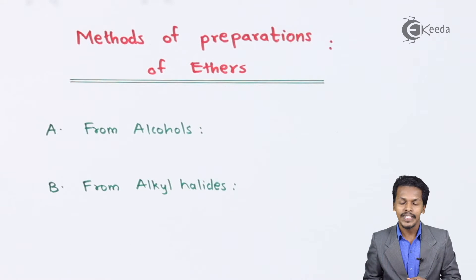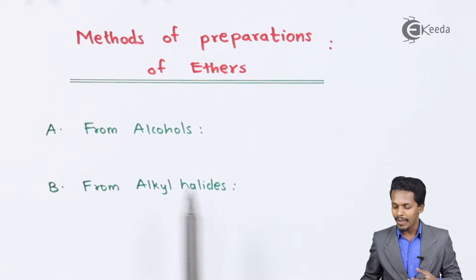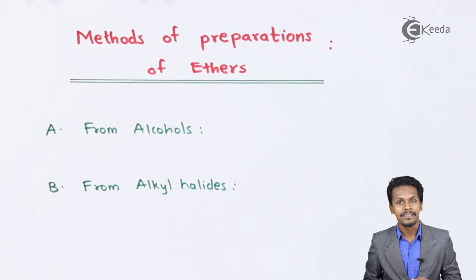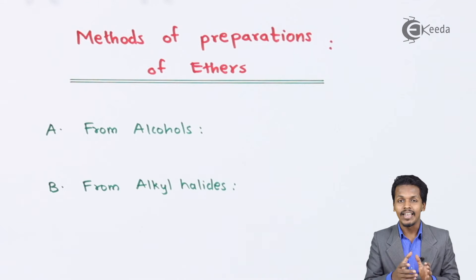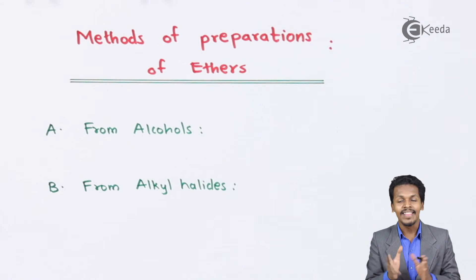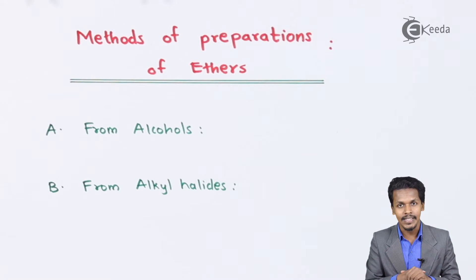Now let me talk about the next one, that is from alkyl halides. If alkyl halide is treated with sodium alkoxide, then we can also form ether. This kind of reaction is known as Williamson synthesis.